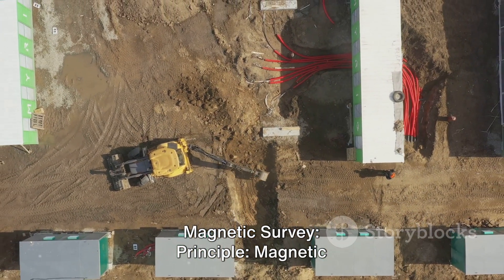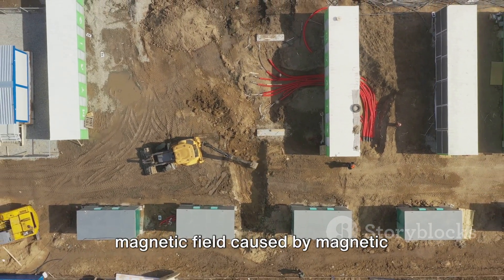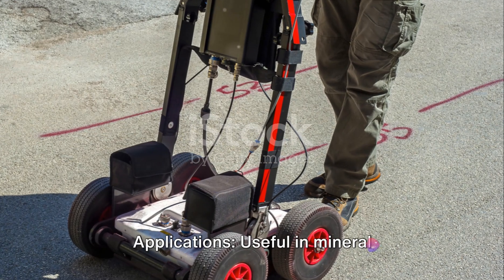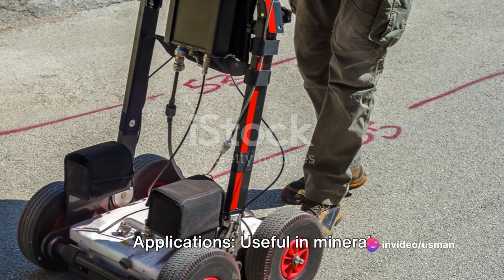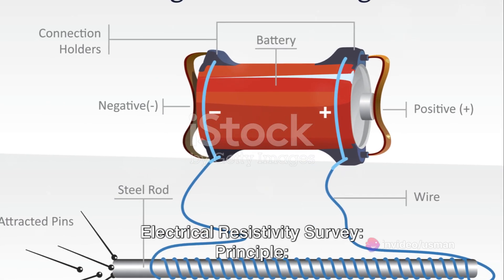Magnetic survey. Principle: Magnetic surveys measure variations in the Earth's magnetic field caused by magnetic properties of subsurface materials. Applications: Useful in mineral exploration, mapping geological structures, and locating buried objects.